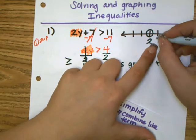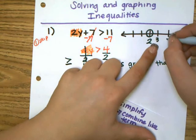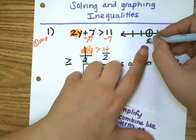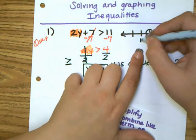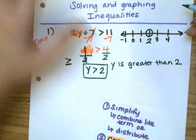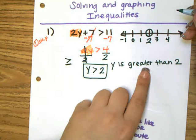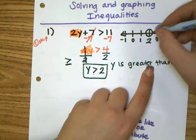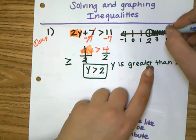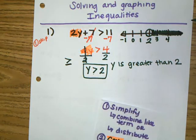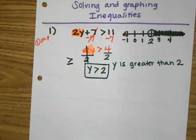On a number line, numbers get bigger and bigger as you go to the right, and smaller and smaller as you go to the left. So I need to shade where the numbers are greater, which means I am going to shade to the right.